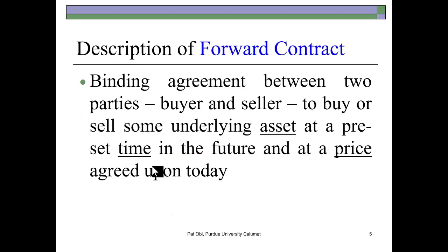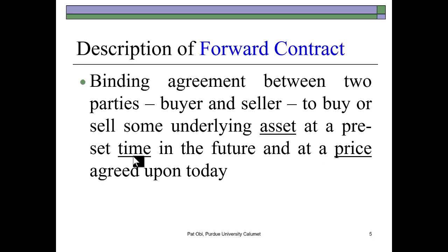A forward contract is a binding agreement between two parties — a buyer and a seller — to buy or sell the underlying asset at a preset time in the future and at a price agreed upon today. There are three important aspects: first, the underlying asset must be defined, for example crude oil; second, the time of delivery in the future must be specified, say two months from now; and third, the price to be paid when the asset exchanges hands is predefined in the contract. All three elements must be in place for a forward contract to be effectuated.